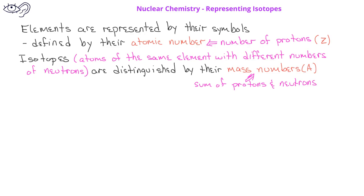We can represent a particular isotope, or nuclide, by a notation which involves the symbol of the element, here represented by X, the mass number in the upper left corner, represented by capital letter A, and the atomic number, represented here by capital letter Z, in the lower left corner.